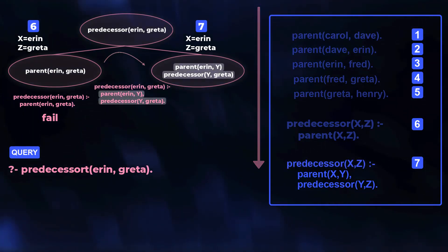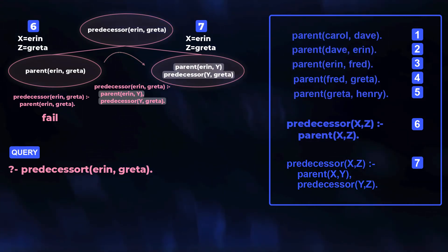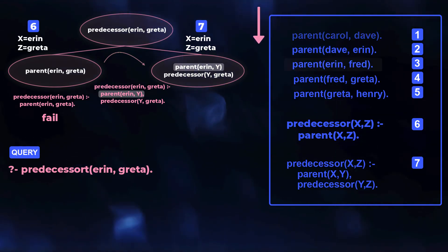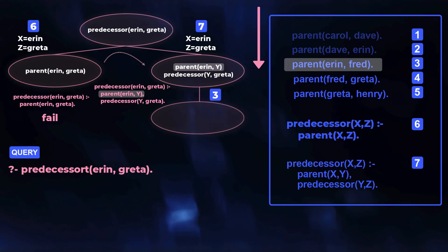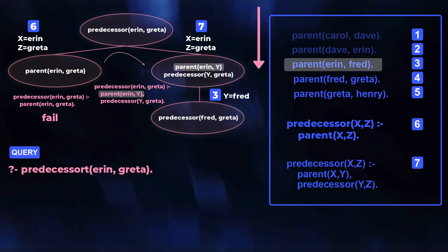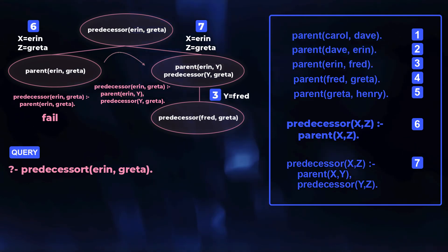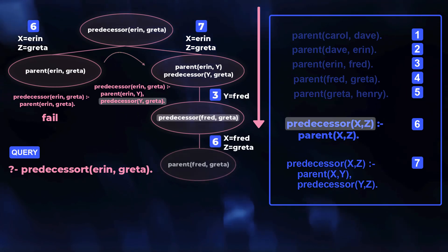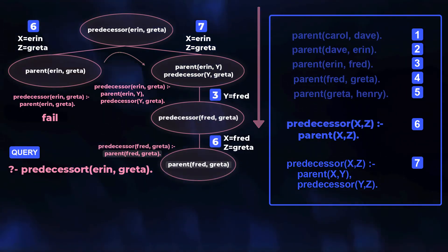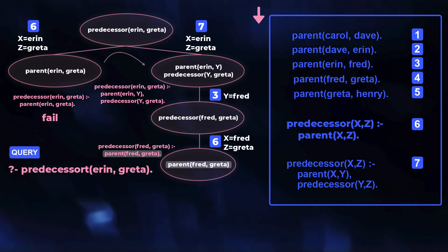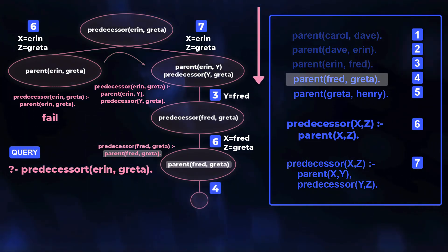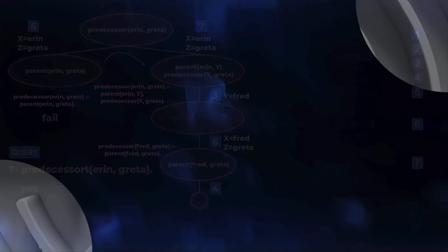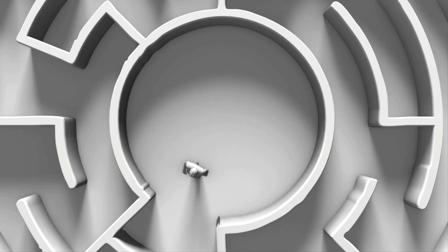Again we have new goals to prove, and Prolog tries them one at a time, in order. A new top-down search for this goal matches clause 3, satisfying the goal and instantiating Y. Starting again for the one remaining goal succeeds with a match on the head of clause 6. And to prove the instantiated right-hand side, a final search again from the top finds a match in clause 4. With no goals left to prove, we've succeeded.